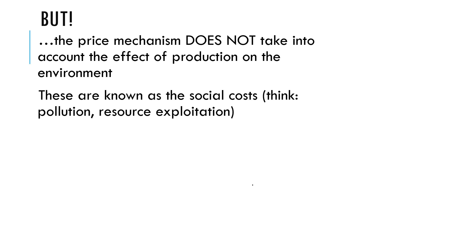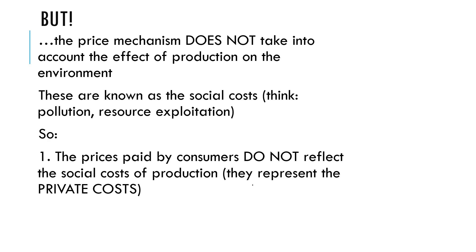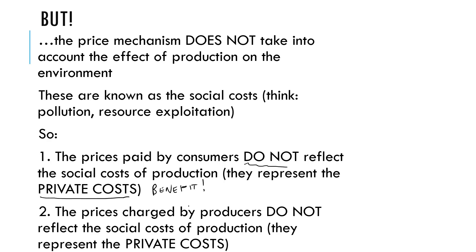The price mechanism does not take into account the effect of production on the environment. There are social costs to do with production — things like pollution or resource exploitation. So we can say: one, the prices paid by consumers do not reflect the social costs of production — they just represent the private benefit that consumers get. And the prices charged by producers do not reflect the social costs of production — they just represent the private costs, the benefit to firms. As a result, we get market failure.